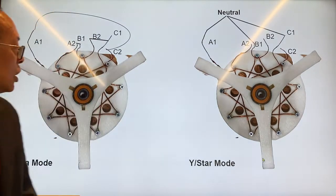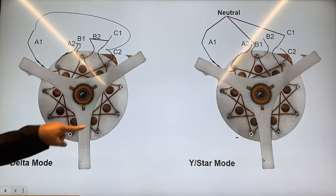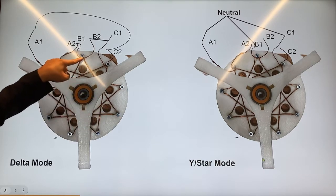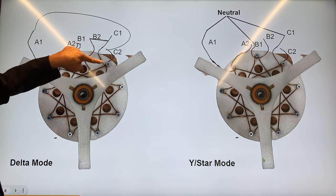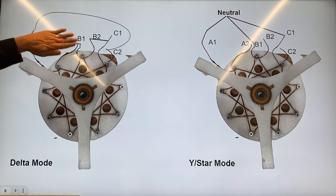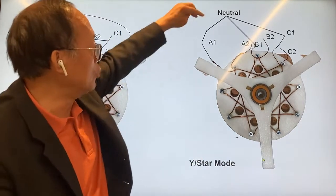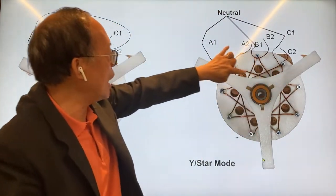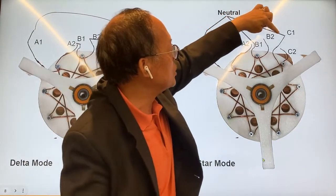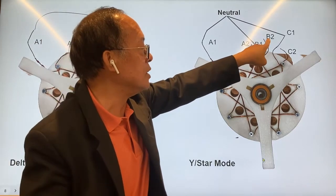This shows how you can connect the Y configuration. In the delta mode: A1 is connected to A2, A2 is connected to B1, B1 connects to B2, B2 connects to C1, C1 goes to C2, and C2 goes back to A1. Phase A is here, phase B is here, and phase C is here. The delta mode is not as efficient in generating voltage as the star mode. In the star mode, A1 goes through here and connects to A2, and A2 would be phase A, because A1, B1, and C1 are all connected to the neutral. So the three-phase power source has phase A, phase B, and phase C.